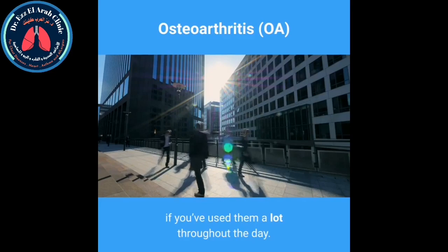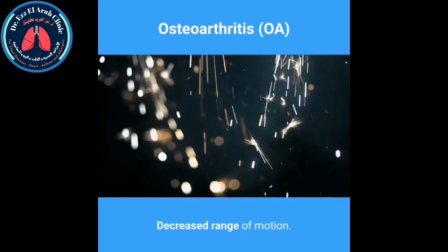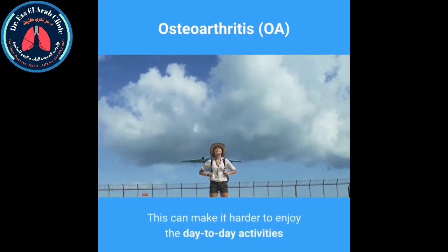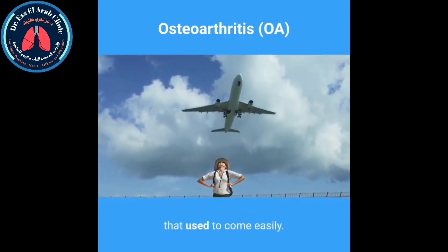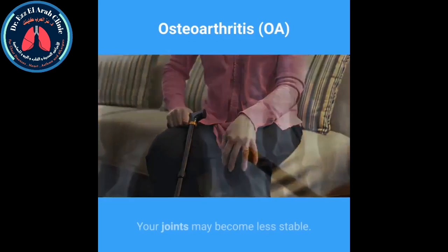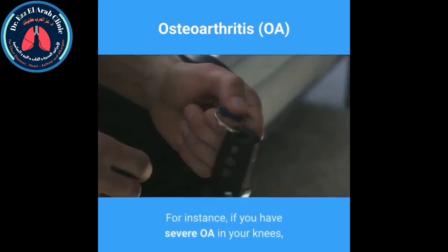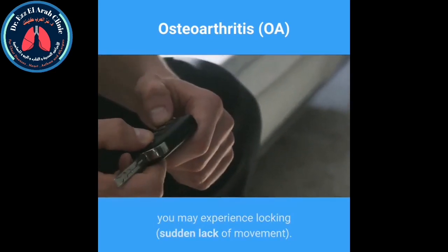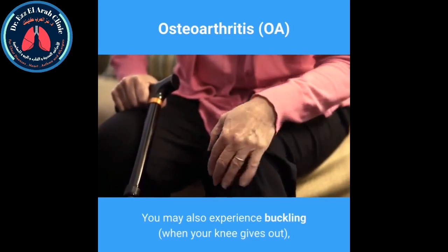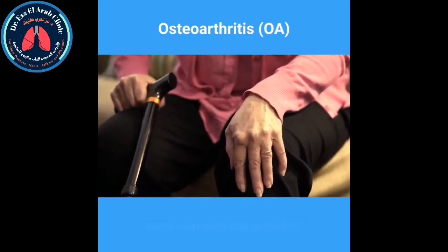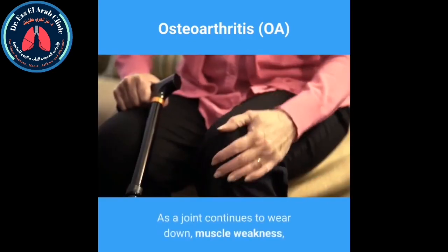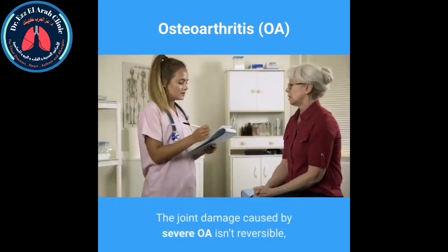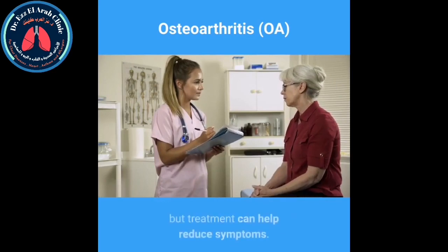Additional symptoms of severe OA include decreased range of motion — you may not be able to move as well due to stiffness or pain, making day-to-day activities harder. Joint instability may also occur; for instance, if you have severe OA in your knees, you may experience locking or buckling, which can cause falls and injury. As a joint continues to wear down, muscle weakness, bone spurs, and joint deformity may also occur. The joint damage caused by severe OA is not reversible, but treatment can help reduce symptoms.